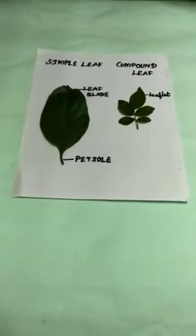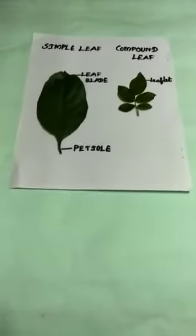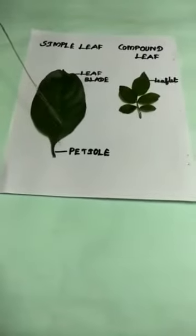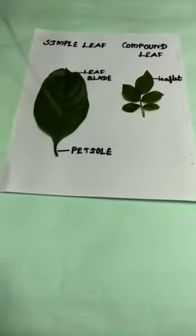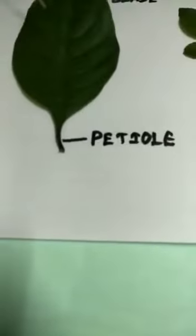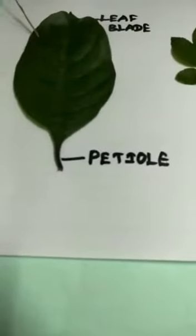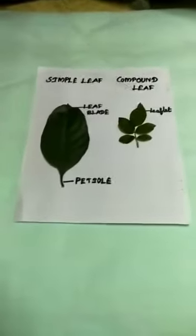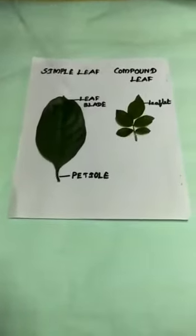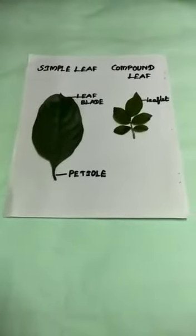Let us talk about the types of leaves. First, the parts of a leaf: the stalk of the leaf is known as the petiole, and the entire portion of the leaf is known as the leaf blade or lamina. The leaf blade has a central midrib surrounded by many veins, and lateral veins are also present. There are two types of leaves: simple leaf and compound leaf.